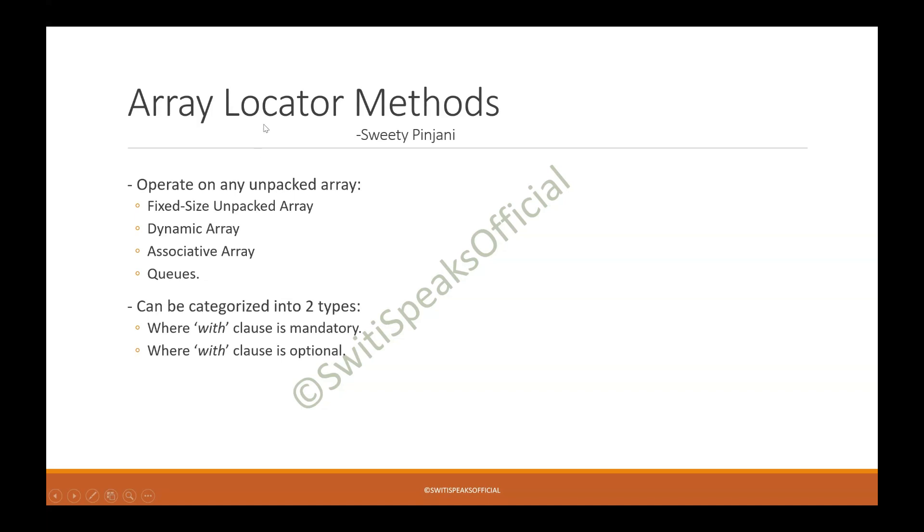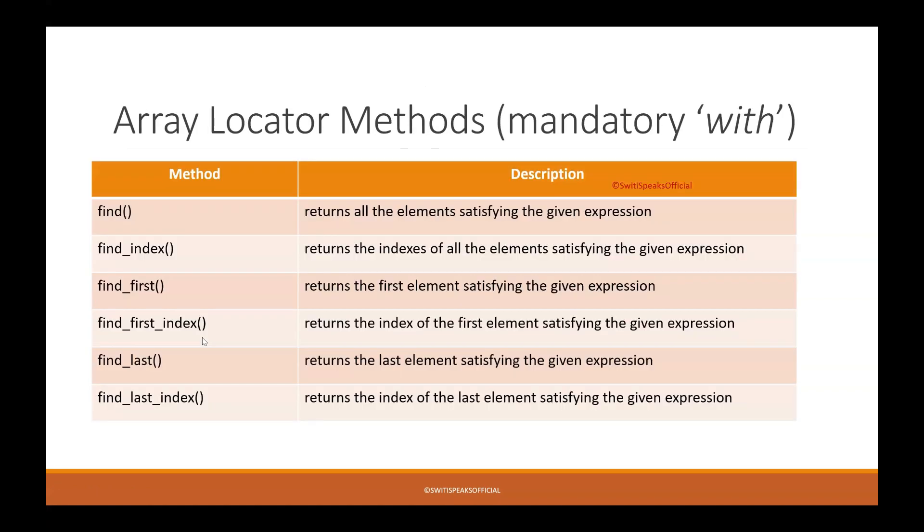Now these Array Locator Methods are broadly categorized into two types: one where with clause is mandatory and one where with clause is optional. Let's see the Array Locator Methods with mandatory with clause.